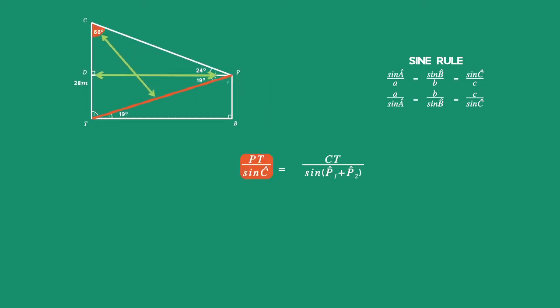PT divided by sine of angle C is equal to CT divided by sine of angles P1 plus P2. Multiply both sides by sine of angle C to get PT by itself.